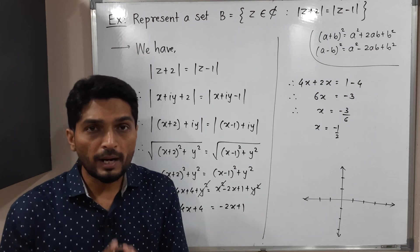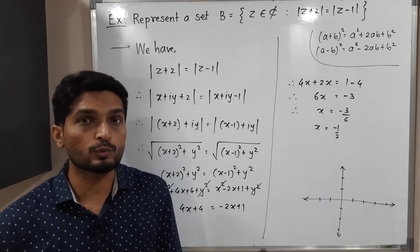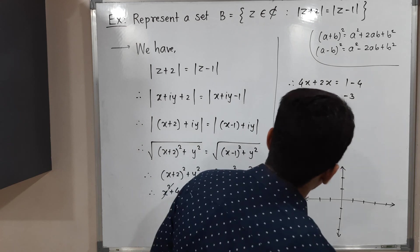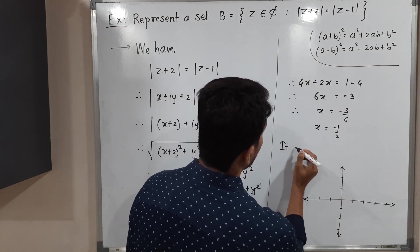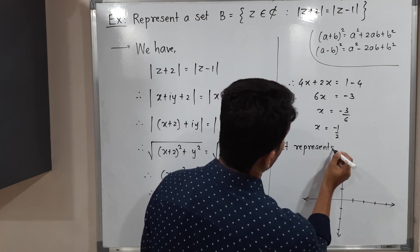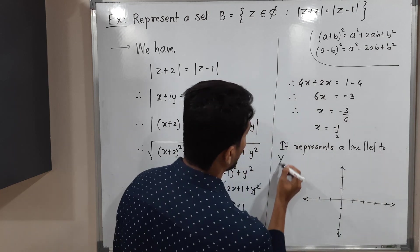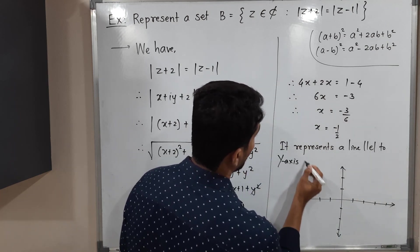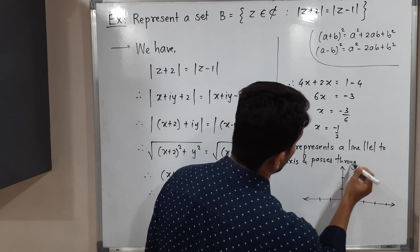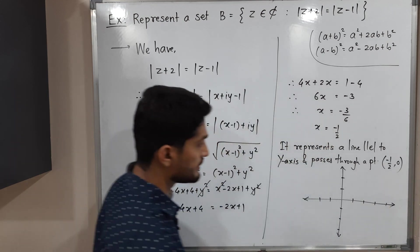So x is equal to minus 1 by 2. It represents a line parallel to y axis and passes through x is equal to minus 1 by 2. So let me mention here. It represents a line parallel to y axis and passes through a point. So that point is minus 1 by 2 comma 0.